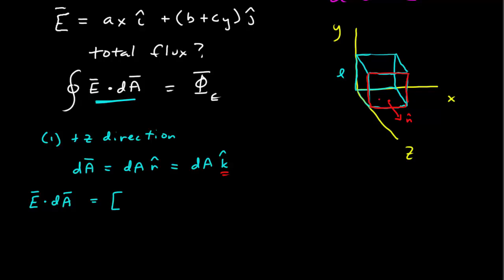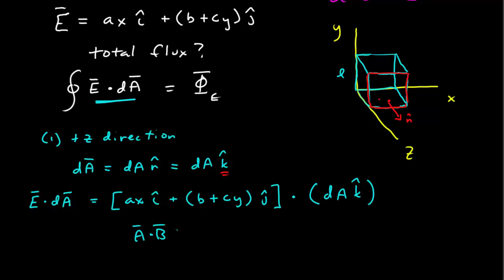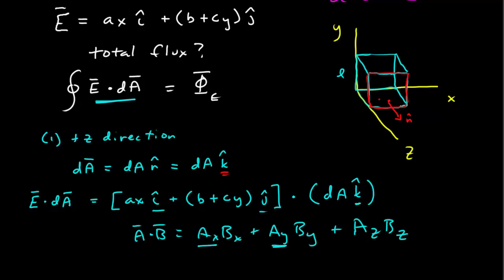For the dot product E · dA k̂: recall that A · B = AxBx + AyBy + AzBz. The electric field only has x and y components, and the area vector only has a z component, so every term is zero and the whole dot product equals zero.